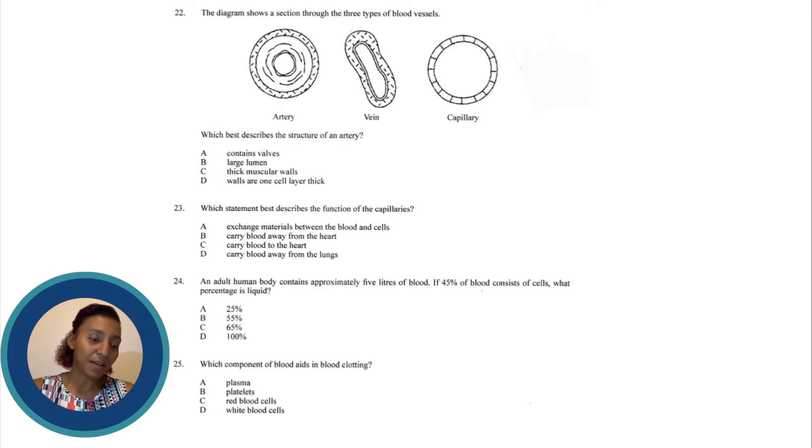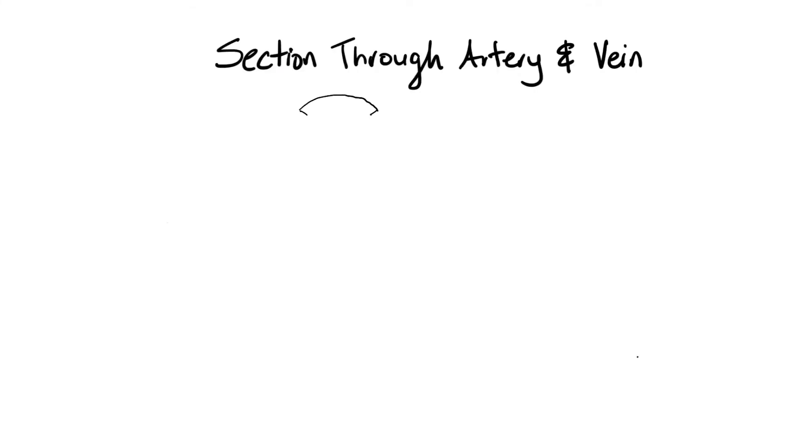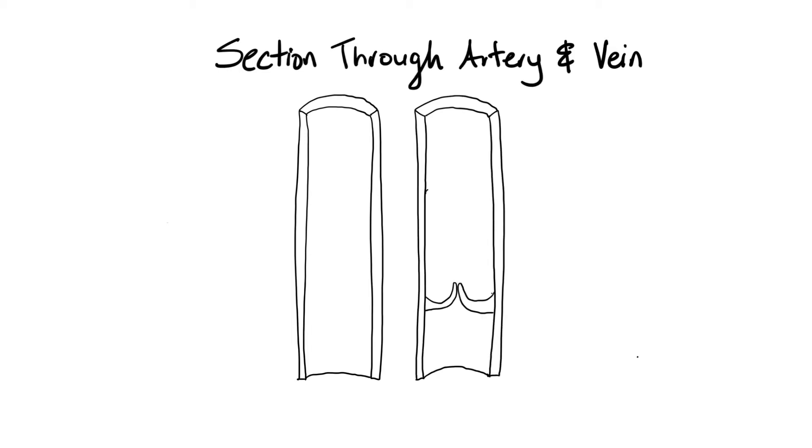So we have the diagrams here that's the artery, the vein and the capillary. So let's look at A. Does an artery or do the arteries contain valves? Well the purpose of the valves are to make sure that blood continues to flow only in one direction and doesn't move in the other direction. And veins will have valves but arteries do not have valves.